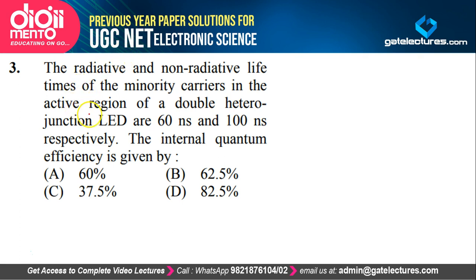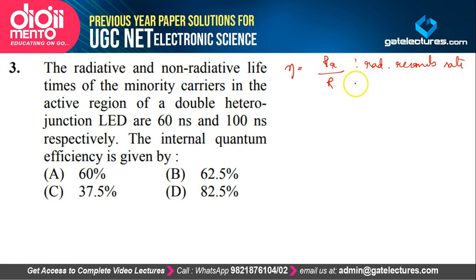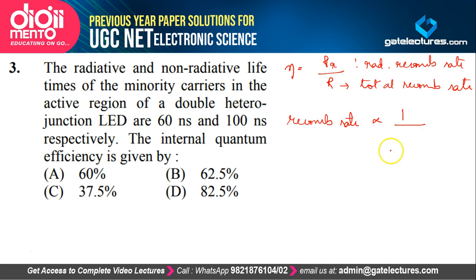The next question discusses radiative and non-radiative lifetimes of minority carriers in the active region of a double heterojunction LED. In an LED, recombination of minority and majority carriers releases energy in the form of light. A double heterojunction LED has two recombination regions. They have given the radiative and non-radiative lifetimes and are asking for internal quantum efficiency. Internal quantum efficiency equals the radiative recombination rate divided by the total recombination rate.